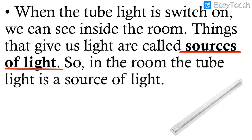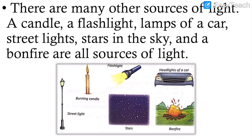We all know what a tube light is because we have it in our homes. We switch on the tube light after sunset when it starts getting dark outside, because we cannot work in the dark — we need light to see objects. The objects that give us light are called sources of light, just like the tube light.